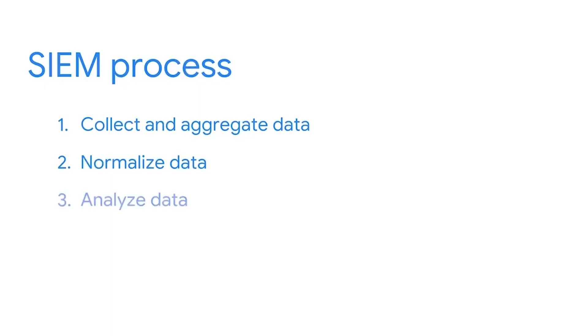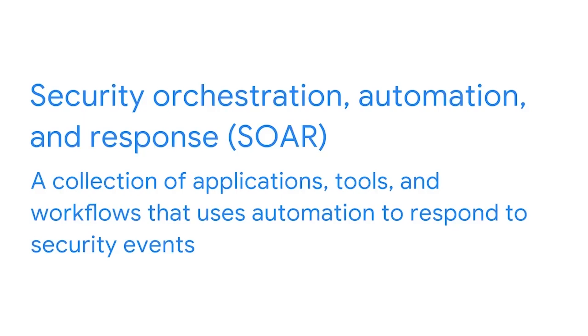Finally, the normalized data gets analyzed according to configured rules. SIEM analyzes the normalized data against a rule set to detect any possible security incidents, which then get categorized or reported as alerts for security analysts to review. Now, Security Orchestration Automation and Response, or SOAR, is a collection of applications, tools, and workflows that uses automation to respond to security events. While SIEM tools collect, analyze, and report on security events for security analysts to review, SOAR automates analysis and response to security events and incidents. SOAR can also be used to track and manage cases, and multiple incidents can form a case, viewable in one centralized place.